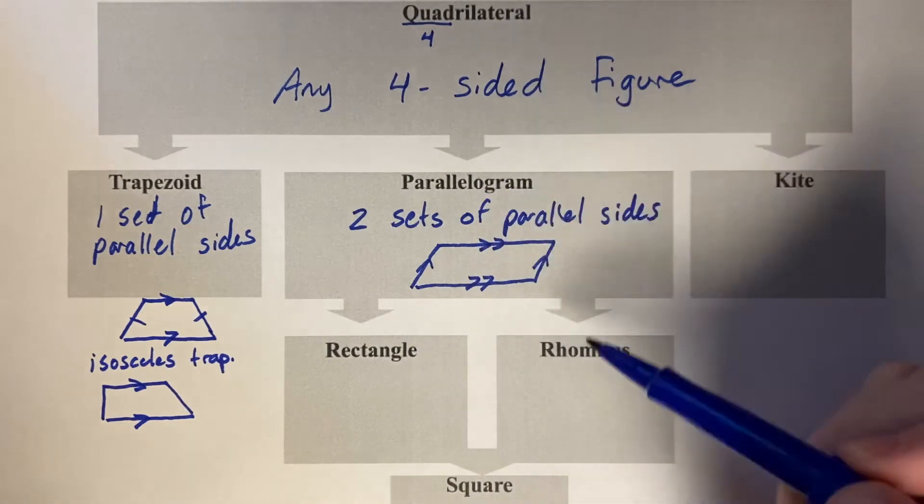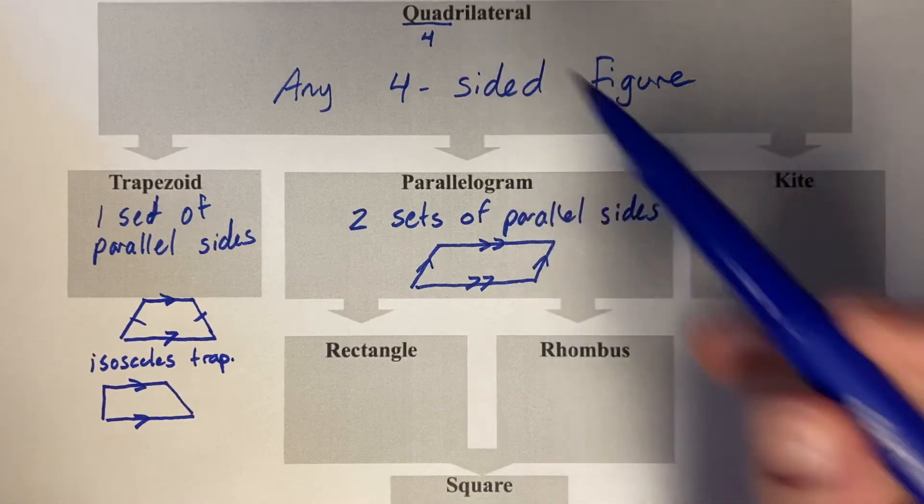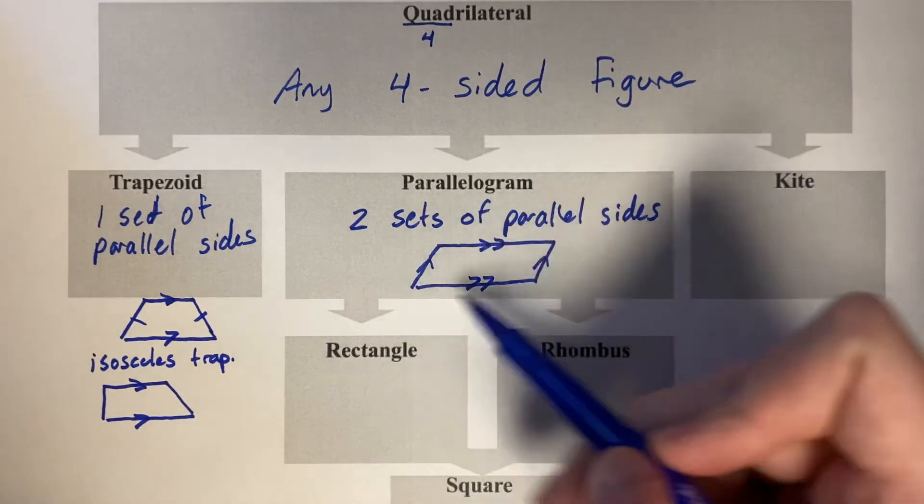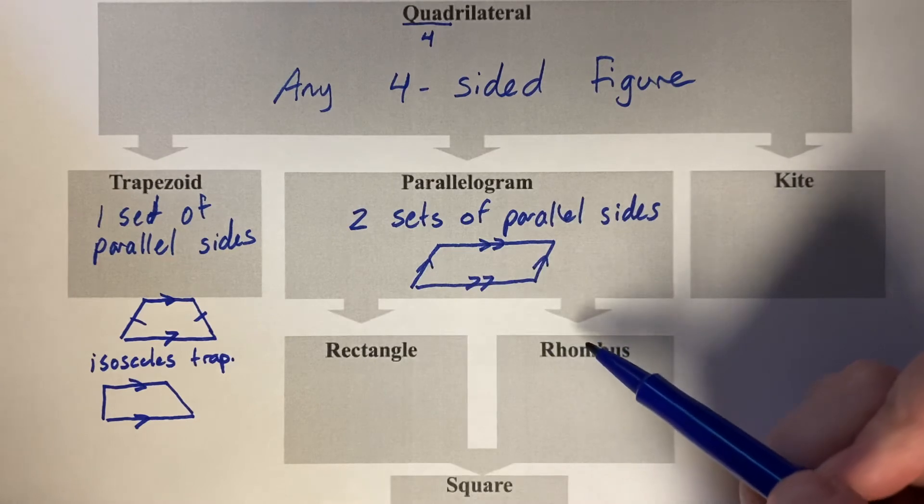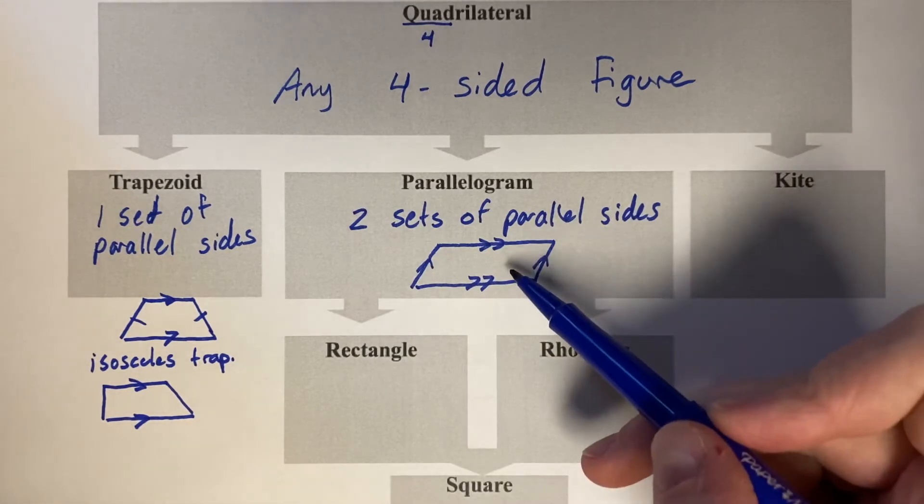A rhombus is a parallelogram and a quadrilateral. So then underneath parallelogram it splits into two features. So if you're a parallelogram,